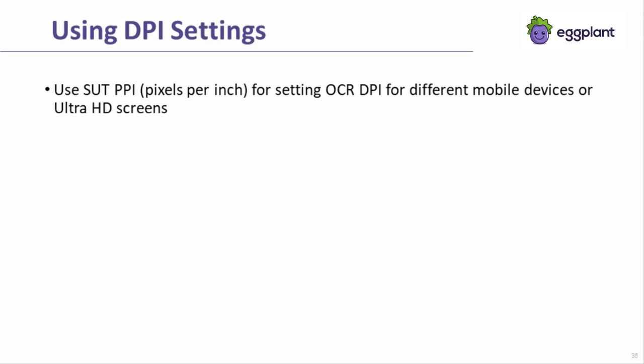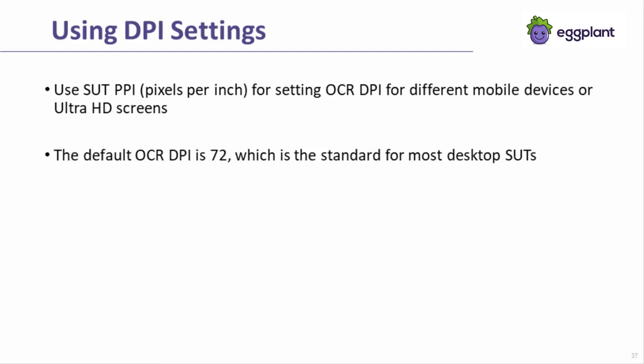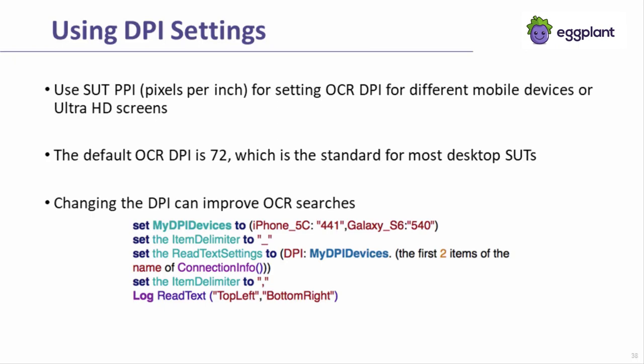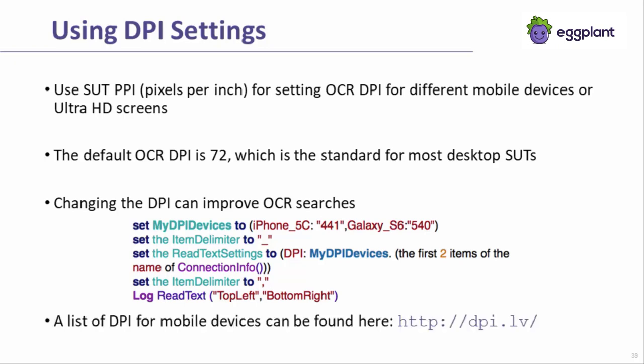The DPI setting improves the reliability of OCR searches and reads. Different devices might require a different DPI setting. The default DPI setting is 72, which is appropriate for most desktop SUTs but might not work well with some mobile devices. By using variables, you can pass the appropriate DPI values into the script at execution time, or have the script automatically determine the identity of the SUT at runtime to populate the variable with the appropriate DPI value. You can find a list of DPIs used by mobile devices online and incorporate those values into your scripts.